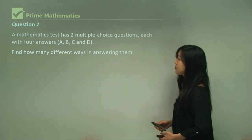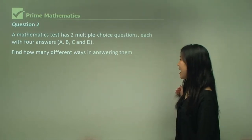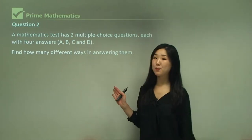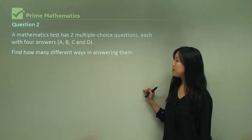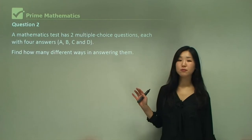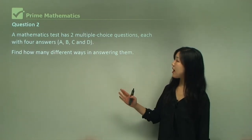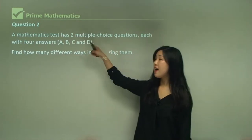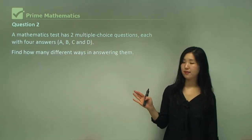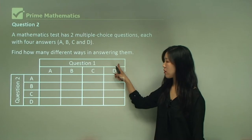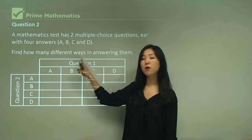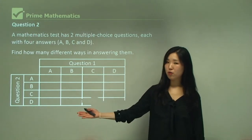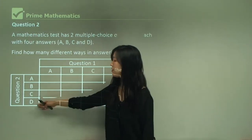Let's try question two. A mathematics test has two multiple choice questions, each with four answers — A, B, C, and D. Find how many different ways there are of answering them. So there are two questions, and they each have four possible choices. Let's call them question one and question two, with possible answers A, B, C, and D for each.